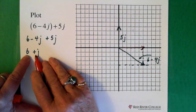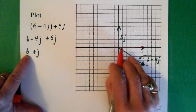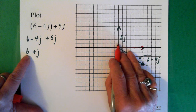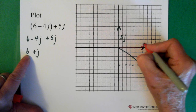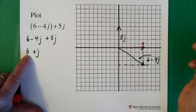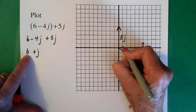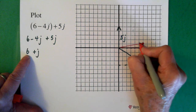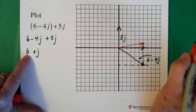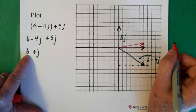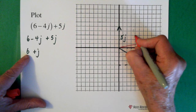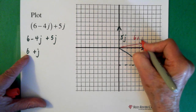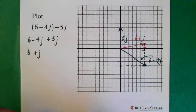So when we add them together, we end up with 6, which is again on the real axis, and plus j — so the plus j is 1 up on the imaginary axis, going up here to this point. This is our final vector, which is 6 plus j. And that's when we add the two of them together.